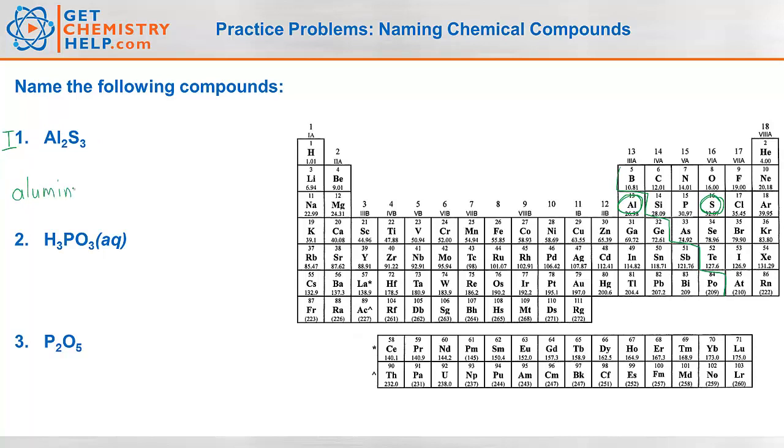Then we have to decide, does this metal need a Roman numeral? Well if it's in group 1, group 2, or the magic triangle then it has a fixed charge and it won't. Oh look it is in the magic triangle so it won't. So just aluminum. Sulfur. That's a non-metal that forms an anion. So non-metals that form anions, we just change the ending to -ide. So that would be sulfide, aluminum sulfide.